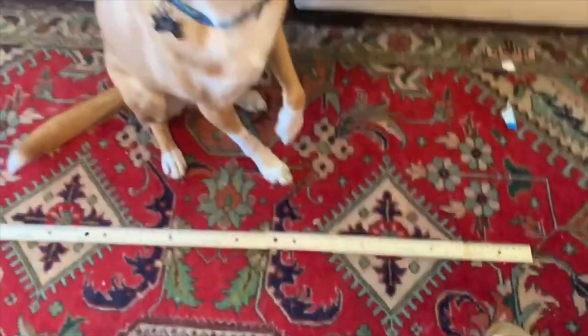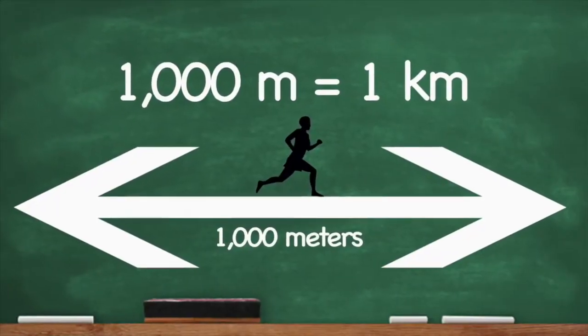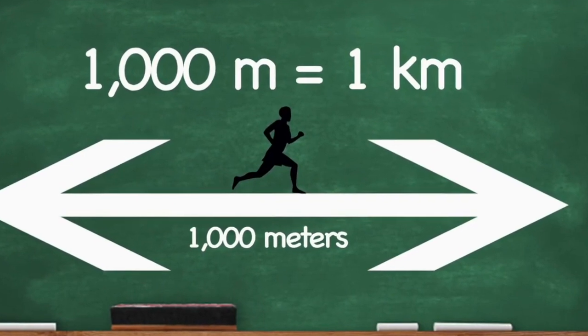OK, let's do it again. 10 millimeters equals 1 centimeter. And 100 centimeters equals 1 meter. 1,000 meters equals 1 kilometer. That's right.